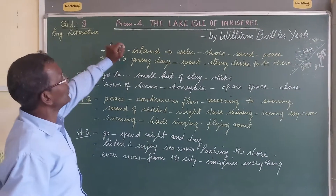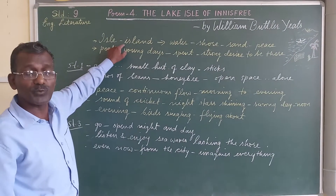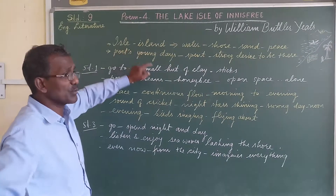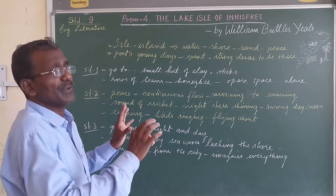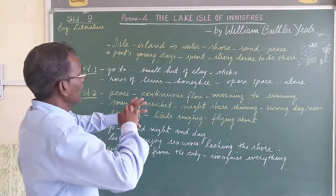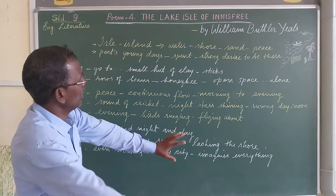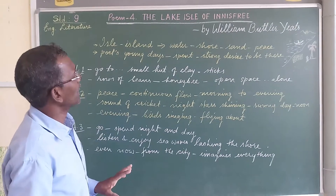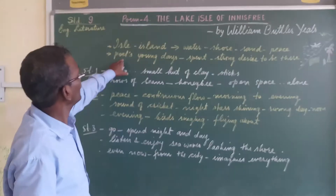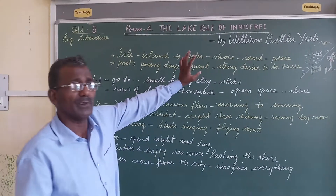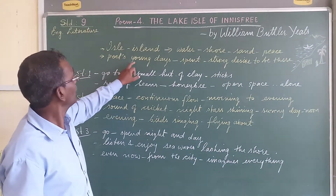To begin with, without taking much time: an island is generally a small island surrounded by water, and within the island there are green plants and rich vegetation. It has a beautiful environment and peaceful atmosphere, shining around the shore. The poet records that he used to be there — at the Lake Isle of Innisfree — he used to go to this island when he was young.